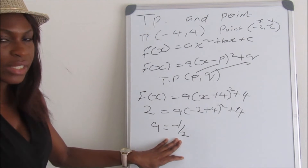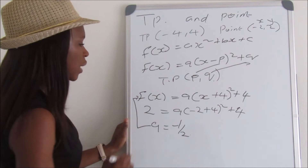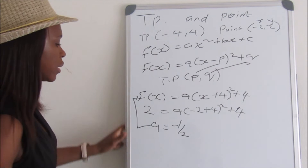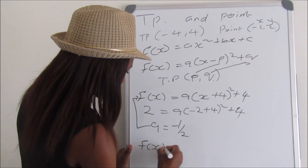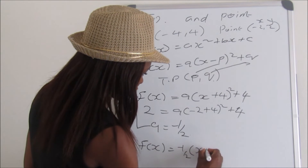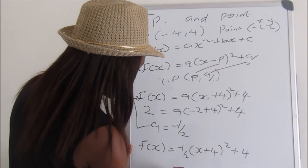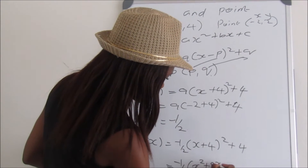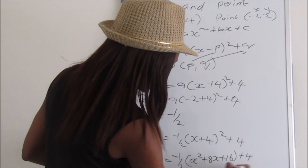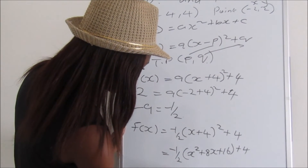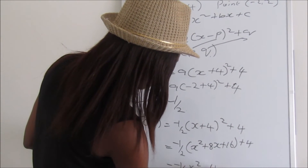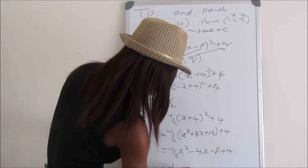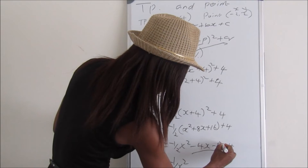Now that a = -1/2, we substitute it into the equation and expand. f(x) = -1/2(x + 4)² + 4. Expanding (x + 4)² gives x² + 8x + 16, so we get -1/2(x² + 8x + 16) + 4, which becomes -1/2x² - 4x - 8 + 4.